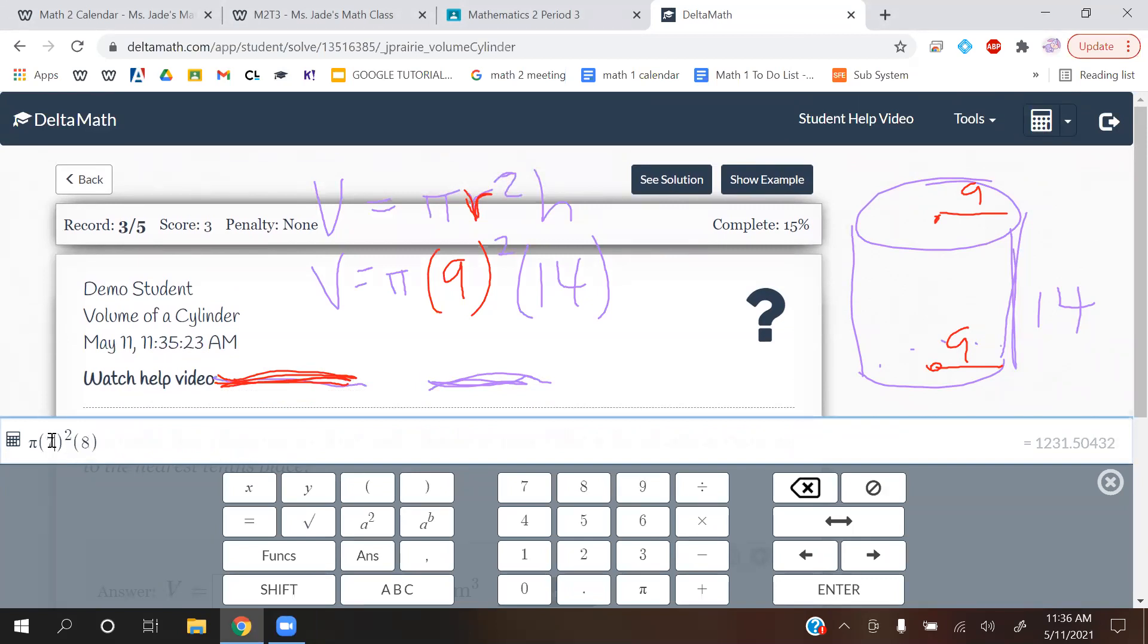π, 9, 14, and it gives me that number that I'm going to write out so that people can see it. 14, and it gives me 534.